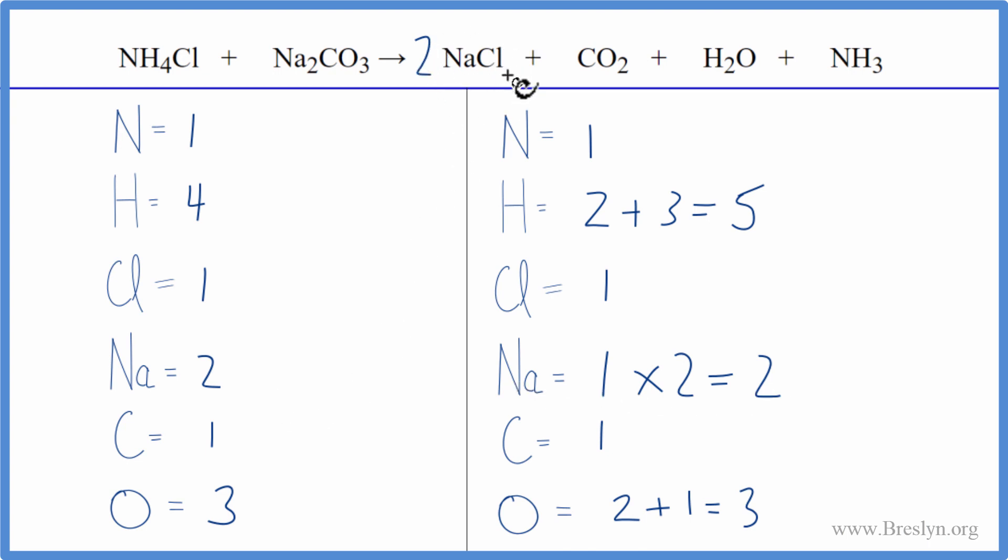The two applies to everything. So one times two, and we have two chlorine atoms. Let's just balance the chlorine atoms next. We'll put a two in front of the ammonium chloride. One times two, so now we have two chlorines. We balance the chlorines.